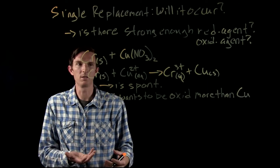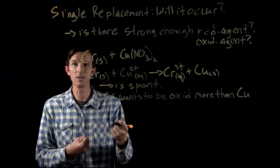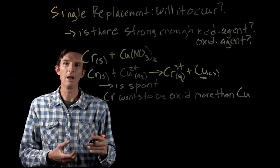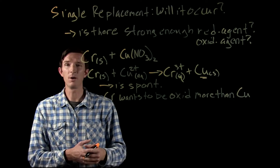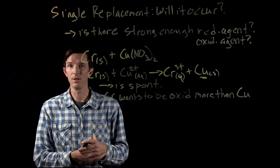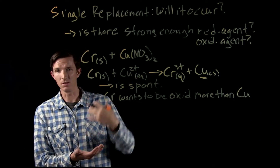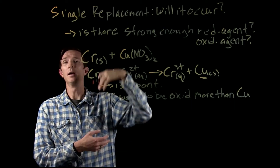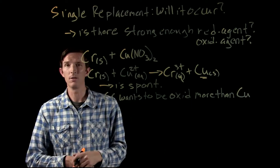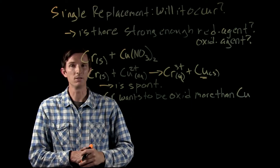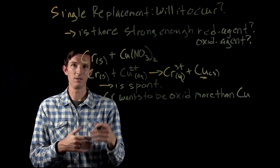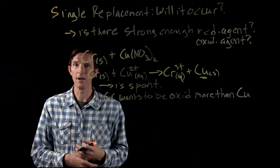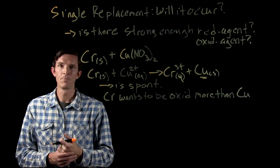Copper doesn't want to be oxidized — it wants to gain electrons, it wants to be neutral copper. We know that based on the activity series table, which tells us that at the bottom are the things that want to be oxidized, and at the top are the things or compounds that want to be reduced. So we can observe that with chromium and copper here.